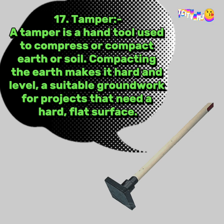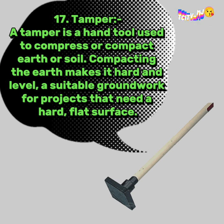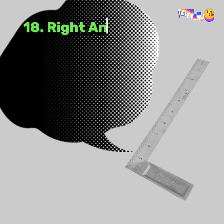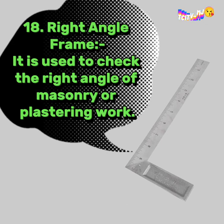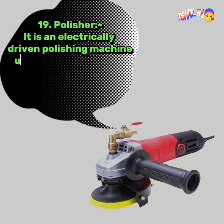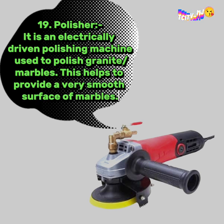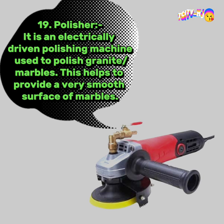Compacting the earth makes it hard and level, a suitable groundwork for projects that need a hard, flat surface. 18. Right Angle Frame: it is used to check the right angle of masonry or plastering work. 19. Polisher: it is an electrically driven polishing machine, used to polish granite and marbles. This helps to provide a very smooth surface of marbles.